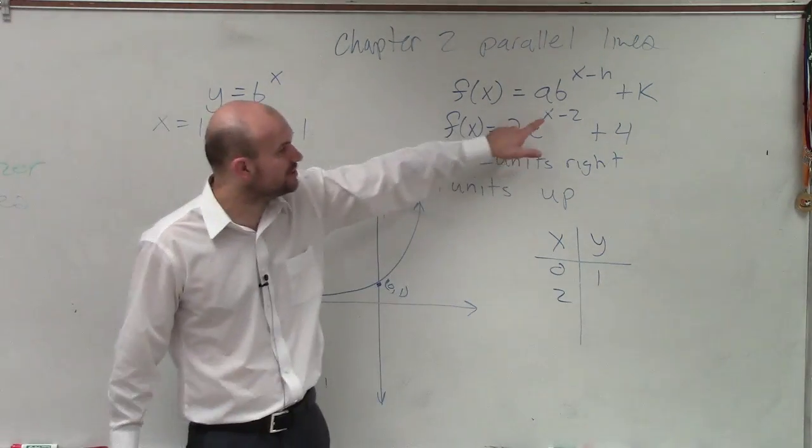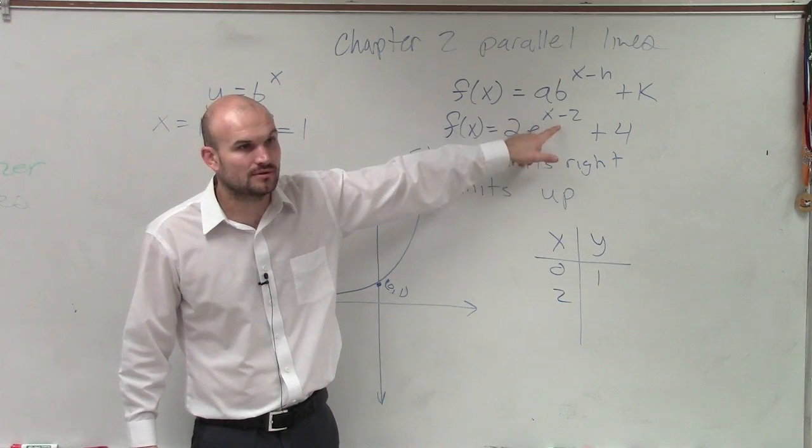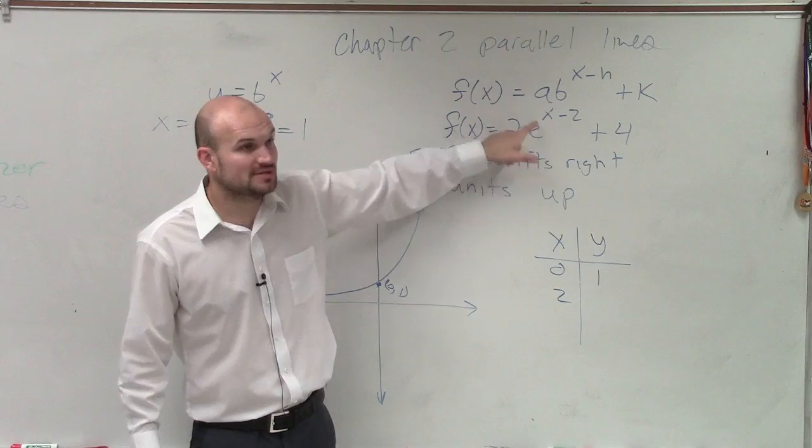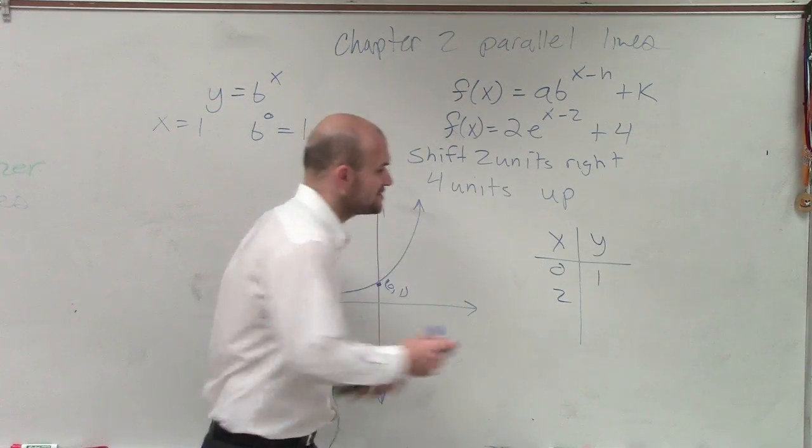How about when x equals 2? And the reason why I chose 2 is because what's 2 minus 2? 0. What's e to the 0? 1. What's 2 times 1? 2. What's 2 plus 4? 6. So guess what? We actually know what two points are. We know we have 0, 1.